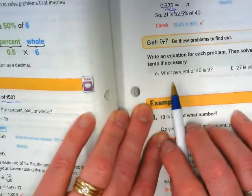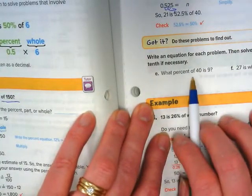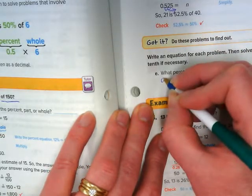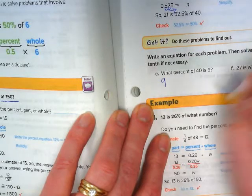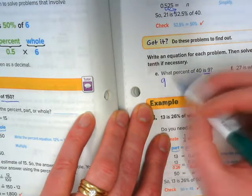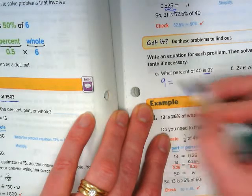So let's try that with this. What percent of 40 is 9? In this case, our 9 is our part, is giving us that hint there.